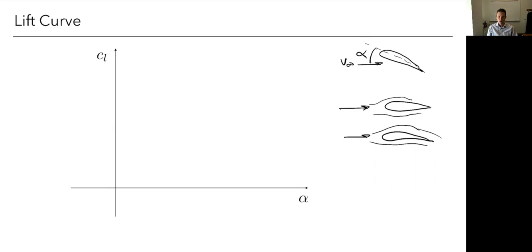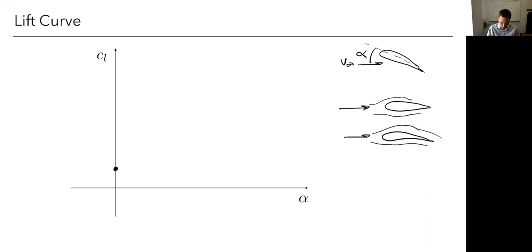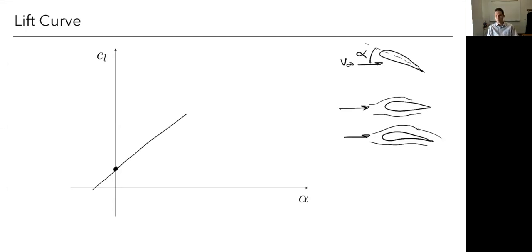For most aircraft wings, we don't have symmetric sections. We have non-symmetric, cambered sections, so the lift at zero degrees angle of attack is going to be some positive number. As we increase angle of attack, we get more and more lift. We're able to accelerate the flow further around the airfoil, create a bigger pressure difference, and generate more lift. And although you may not expect this, that behavior is very linear — lift increases linearly with angle of attack.